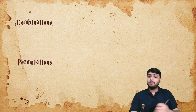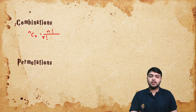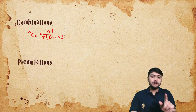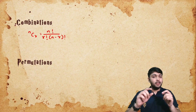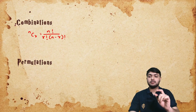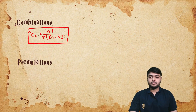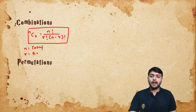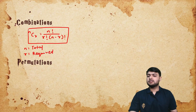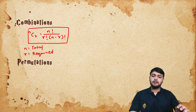Now let's move on to combinations and permutations. Before discussing what these concepts mean or when they are applied, let's first look at the formulas. nCr is n factorial upon r factorial times (n minus r) factorial. Do not get intimidated by this formula — it's very simple. Here n is the total items and r is the required items.